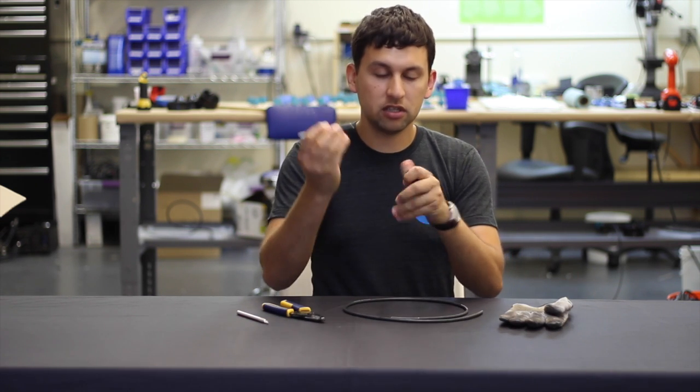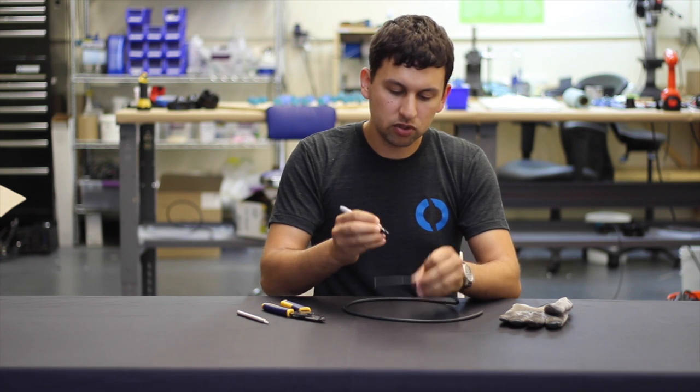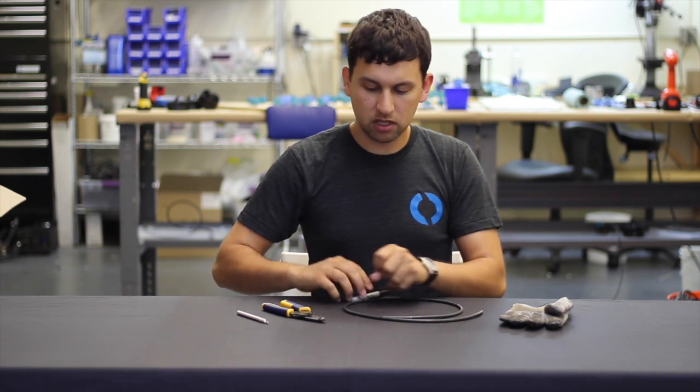I'm going to start here by taking the permanent marker and just marking where on the wire we want to strip the jacket. I'll put on the glove.